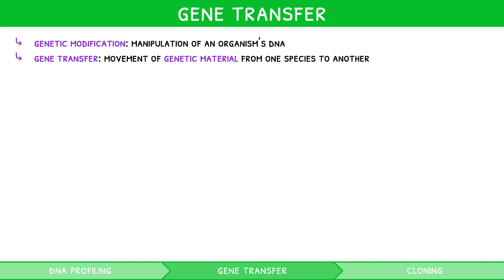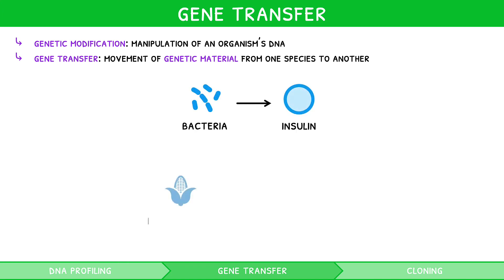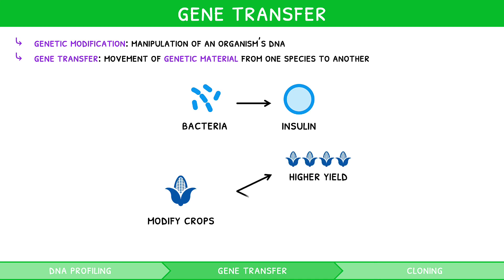Commonly, we use gene transfer to either create in-demand human proteins, such as insulin, using bacteria, or to modify crops to introduce desired characteristics, such as high yield or weather and pest resistance.